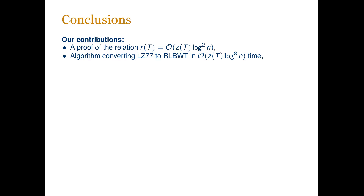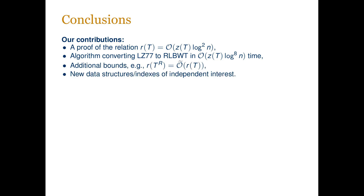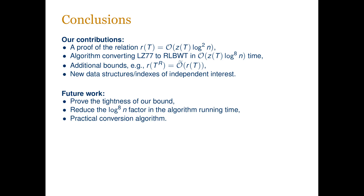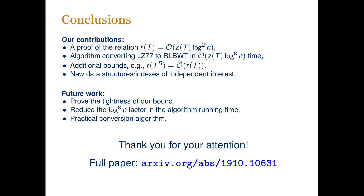We have presented a proof that r is, up to log factors, bounded by z. In the paper we also describe the first algorithm able to convert between LZ77 compressed text and BWT compressed text in time essentially proportional to the size of the compressed data. Additional auxiliary results include the first bound relating r for a text and its reverse, as well as new data structures and indexes of independent interest. Future work includes proving the tightness of our bounds, reducing the log factor in the runtime, and designing practical algorithms for converting between compressed representations. Thank you for listening. The full paper can be found at the provided address.